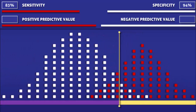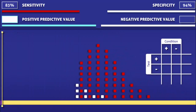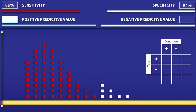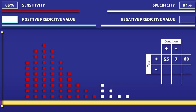Next, let's move on to the positive predictive value. Since the positive predictive value only takes into consideration people with a positive test, we are going to focus on the squares to the right of the cutoff level. Counting the squares, we find that 53 positive tests were true and 7 positive tests were false. Since the positive predictive value is the proportion of positive tests that are correct, we calculate it by dividing 53 by 60, giving us a positive predictive value of 88%.